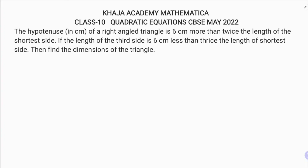The hypotenuse of a right angle triangle is 6 centimeters more than twice the length of the shortest side. If the length of the third side is 6 centimeters less than thrice the length of the shortest side, find the dimensions of the triangle.